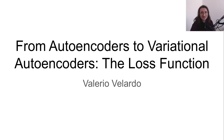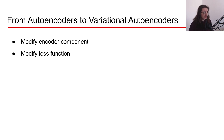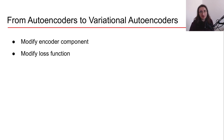Hi everybody and welcome to a new exciting video in the 'Generating Sound with Neural Networks' series. If you remember from the previous video, we said that in order to move from autoencoders to variational autoencoders we have to modify both the encoder components and the loss function. In the previous video we focused on the encoder components; today we're going to be focusing on the loss function.